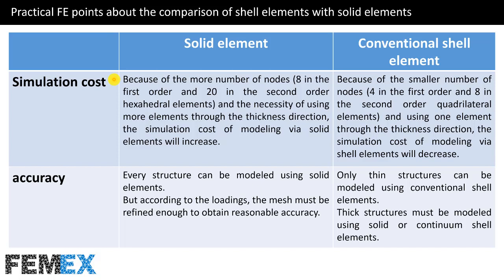There are 8 nodes in first-order and 20 nodes in second-order hexahedral elements. About the accuracy: every structure can be modeled using solid elements, but the mesh must be refined enough to obtain reasonable accuracy. Only thin structures can be modeled using conventional shell elements. Thick structures must be modeled using solid or continuum shell elements.